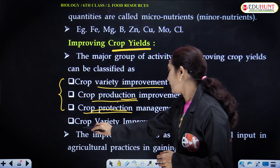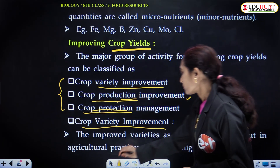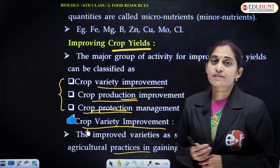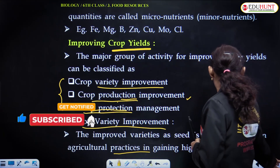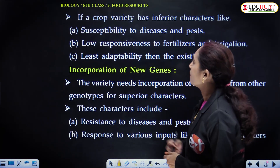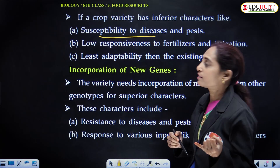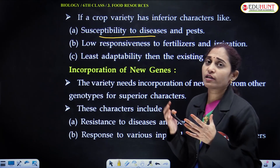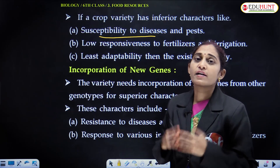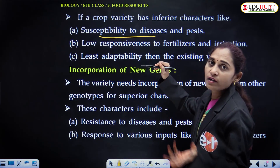Crop variety improvement is done by producing improved varieties through agricultural practices — varieties that yield high grains both quality-wise and quantity-wise. If a crop variety has inferior characters like susceptibility to disease, if it is not resistant to a particular pest or disease, then it will get the disease and die. Because of that, the farmer may experience yield losses before harvest.